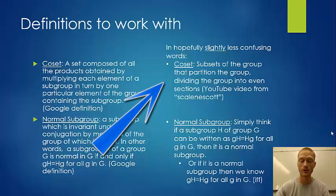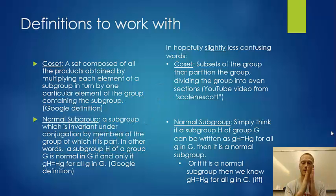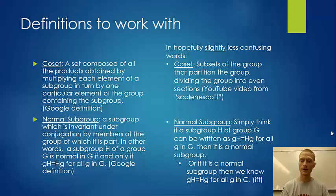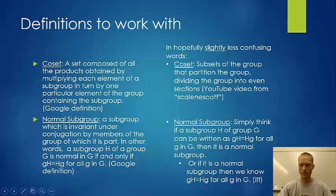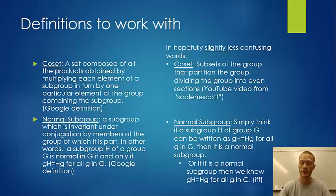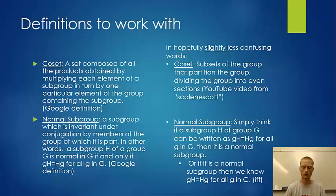Simplified: a coset is a subset of the group that partitions the group. If we have a main group, we chop it up into equal-sized partitions — each coset will be the same size. For a normal subgroup: if a subgroup H of a group G can be written as gH equals Hg for all g in G, then it is a normal subgroup. It's an if and only if statement.